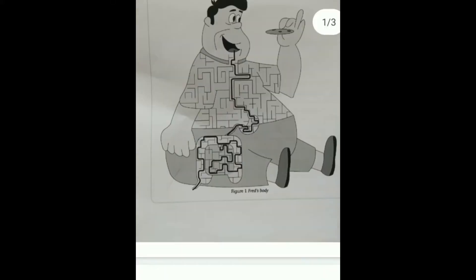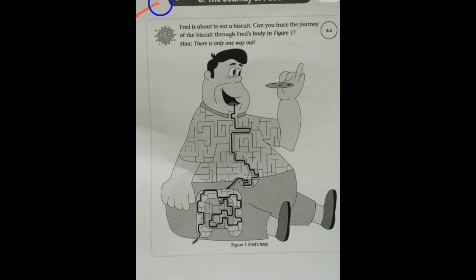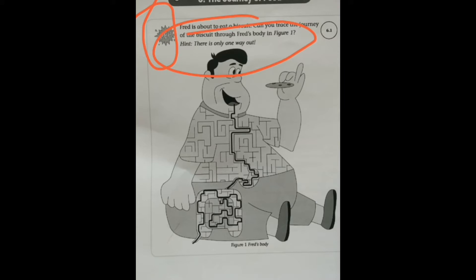Fred is about to eat a biscuit. Can you trace the journey of the biscuit through Fred's body in Figure 1? There is only one way out. We have been given a hint — Fred wants to eat a biscuit. So now we need to see the biscuit's journey: where does it go? This means we are studying a system — the Digestive system.